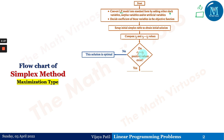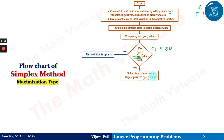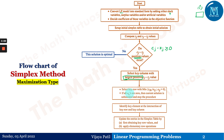If we do have a Cj minus Zj positive value — this is very important — we consider it as greater than zero or equal to zero. If all of them are negative or zero, we move ahead to the optimal solution. But if there exist positive values, then we have to select the key column with the largest positive Cj minus Zj value. Then with that largest value, we go and select the key row with the minimum of xbi divided by aij.